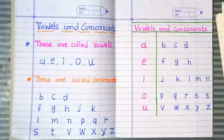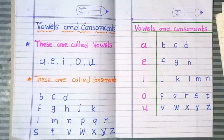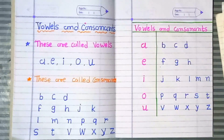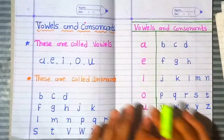Children, today I am going to teach you about vowels and consonants. The English alphabet has 26 letters. All these letters you have learned to write. In this video, you will learn what are vowels and what are consonants.